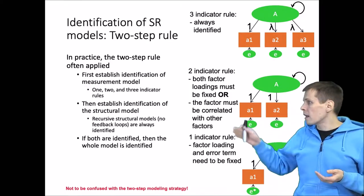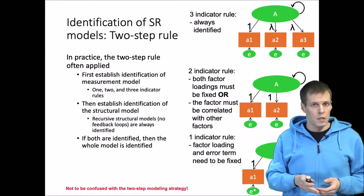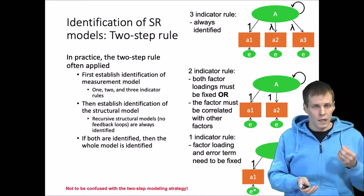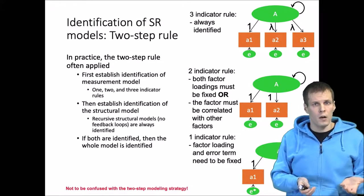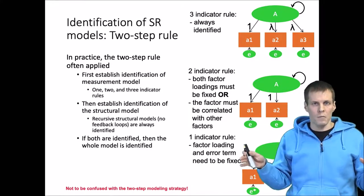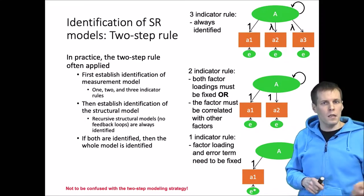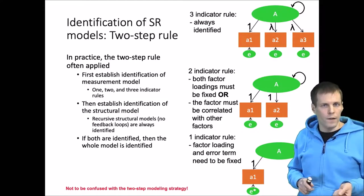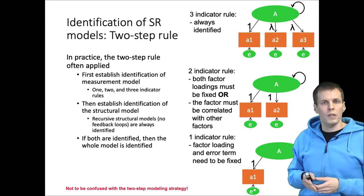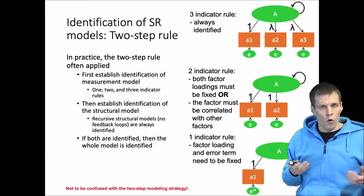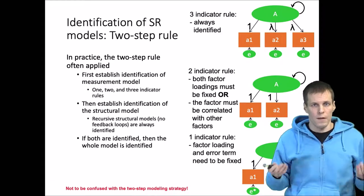We first check that the latent variables are identified, so if the confirmatory factor analysis can be meaningfully estimated. A latent variable is identified if it has three indicators, or if it has two indicators and it is embedded in a larger system, or two indicators and one of the indicators is fixed to one. Single indicator latent variables are identified if we constrain the reliability of the single indicator to a known value, taken from existing research, or set to zero if we think the measurement error is very small.